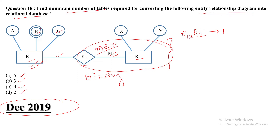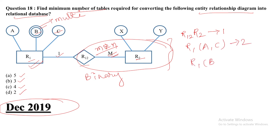B is shown with a double oval shape. A double oval shape represents a multi-valued attribute. Multi-valued attributes always require a separate table to store their values. That is why R1 creates two tables: first, R1 with attributes A and C; second, R1 with attribute B.